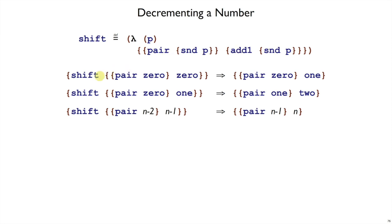So, if we start with shift on 0, 0, we will pair 0 and 1. And then, if we shift that 0 and 1, we'll end up with 1, 2, and so on. So, again, after n steps, we just paired n minus 2 and n minus 1, and we get now n minus 1 and n, and we'll be able to ignore this n and just take the n minus 1. That's how we do sub1.